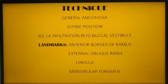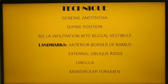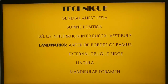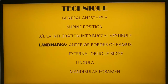The procedure is done under general anesthesia with the patient in supine position. Local anesthetic solution is infiltrated into the buccal vestibule along the ramus on both sides. The landmarks to keep in mind are the anterior border of the ramus, the external oblique ridge, lingula, and mandibular foramen.